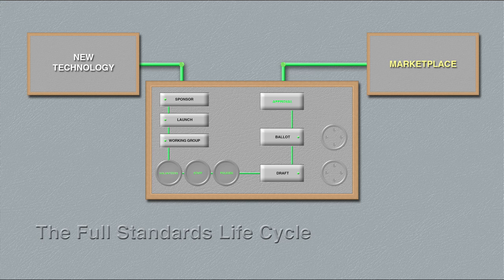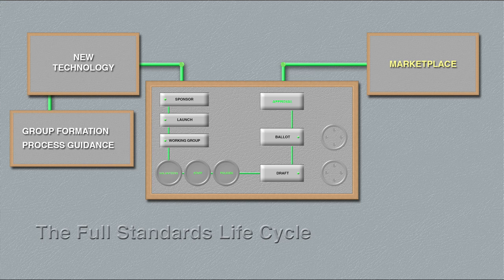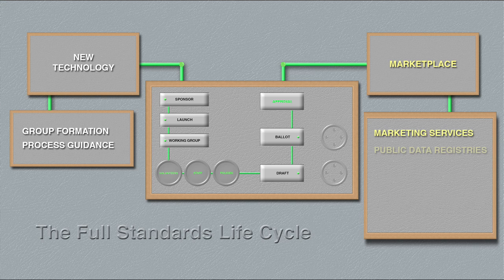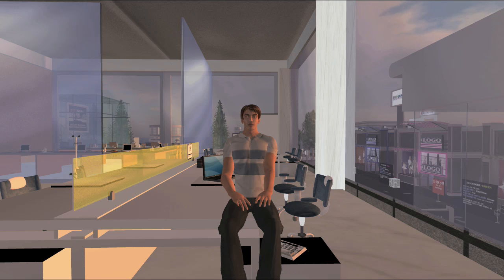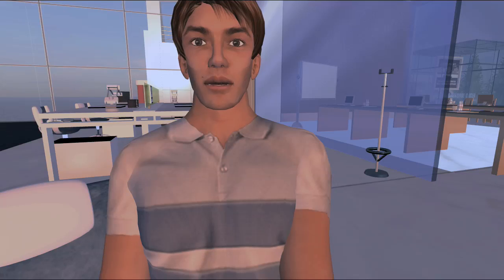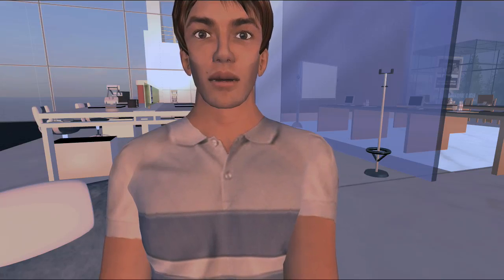The SA can guide a potential project through the process of assembling an appropriate group. When the time comes, the SA guides the group through its standards process, from permission to launch a standards project to ultimate approval. And even beyond, to marketing services, public data registries, consortium creation, and liaisons with other IEEE entities and services. So the standards life cycle takes the traditional consensus standards and adds value, from customized services to positioning the work within a larger framework.